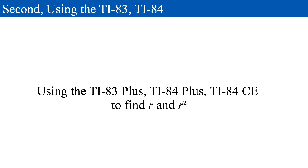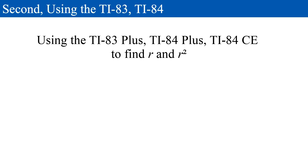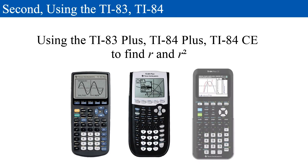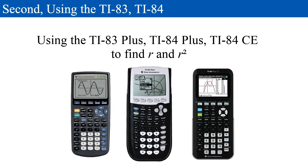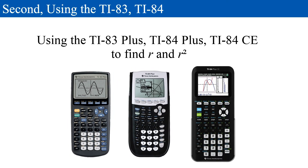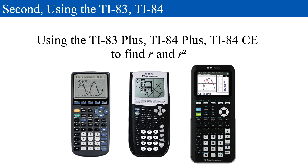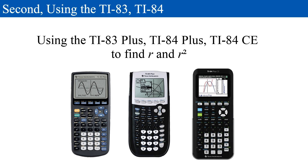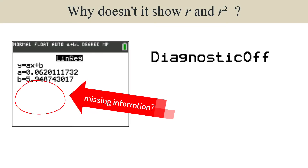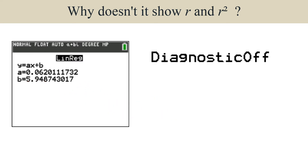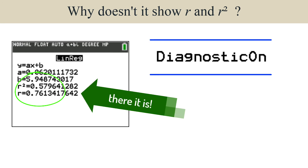Now that you know how to calculate the correlation coefficient by hand, you know that it is a lot of work. The procedure you're about to see is nearly identical for the TI-83+, the TI-84+ including the Silver Edition, and the TI-84+ CE including the Python Edition. We will use the same data from the previous example.